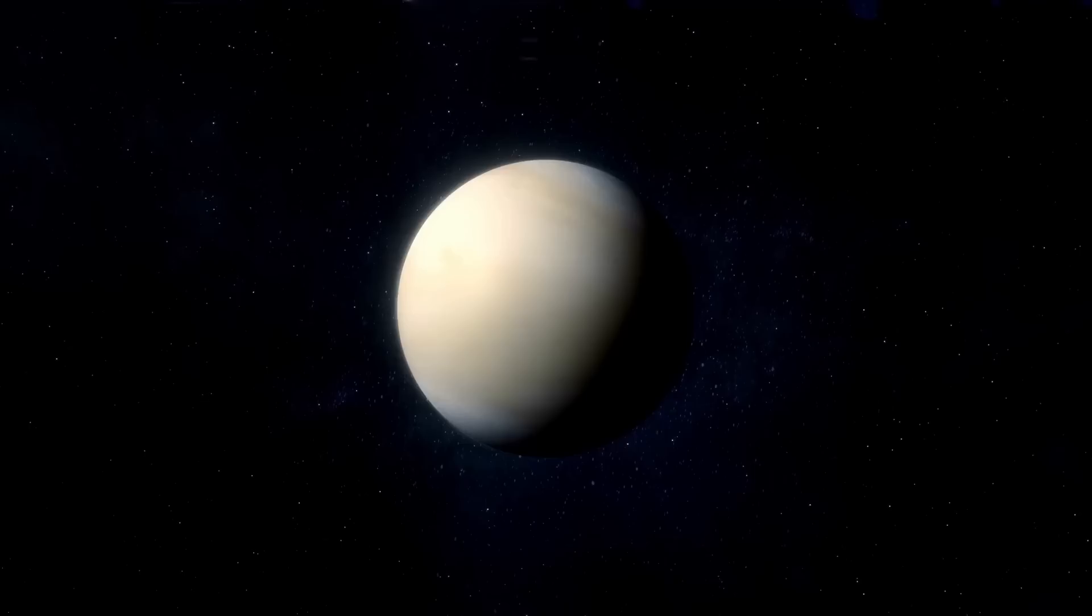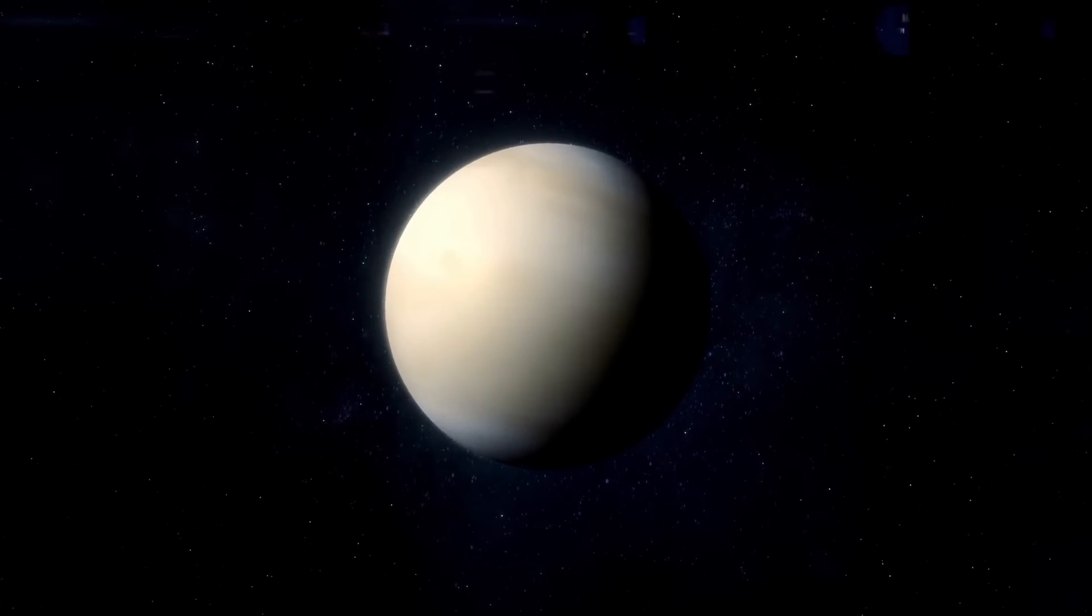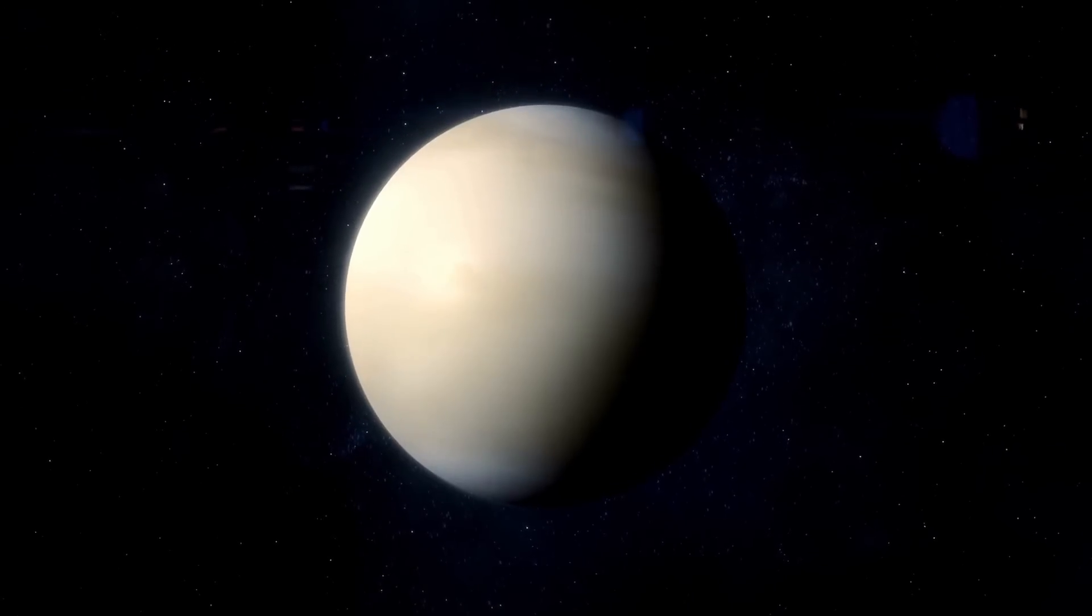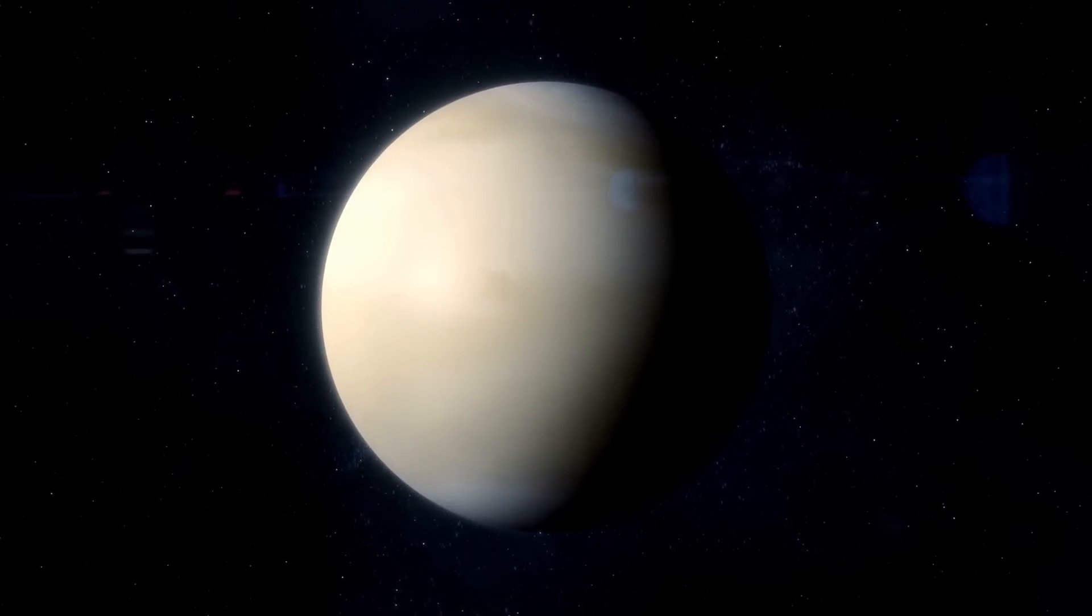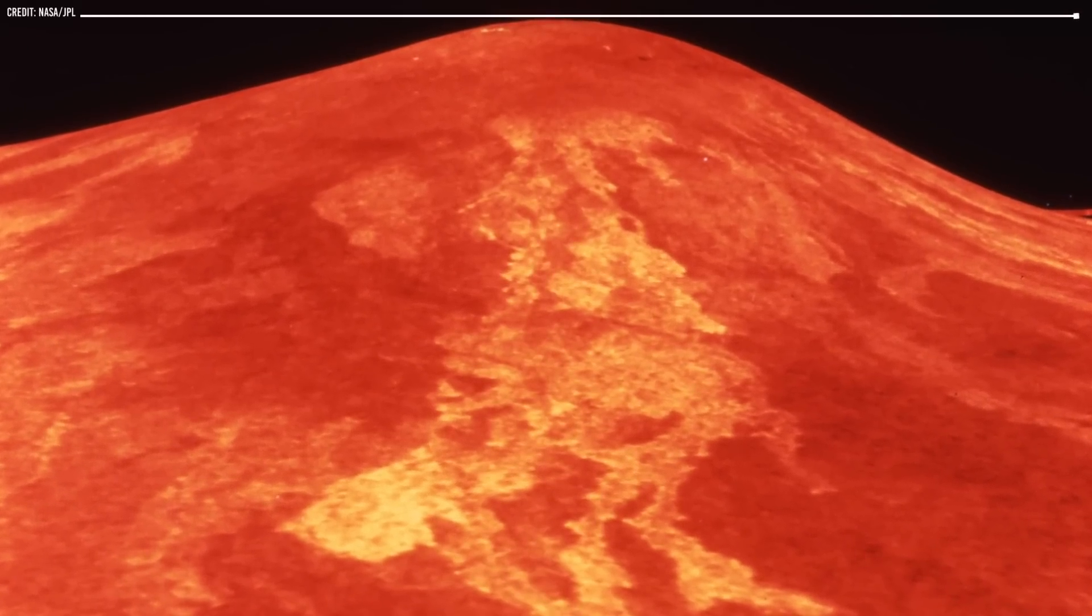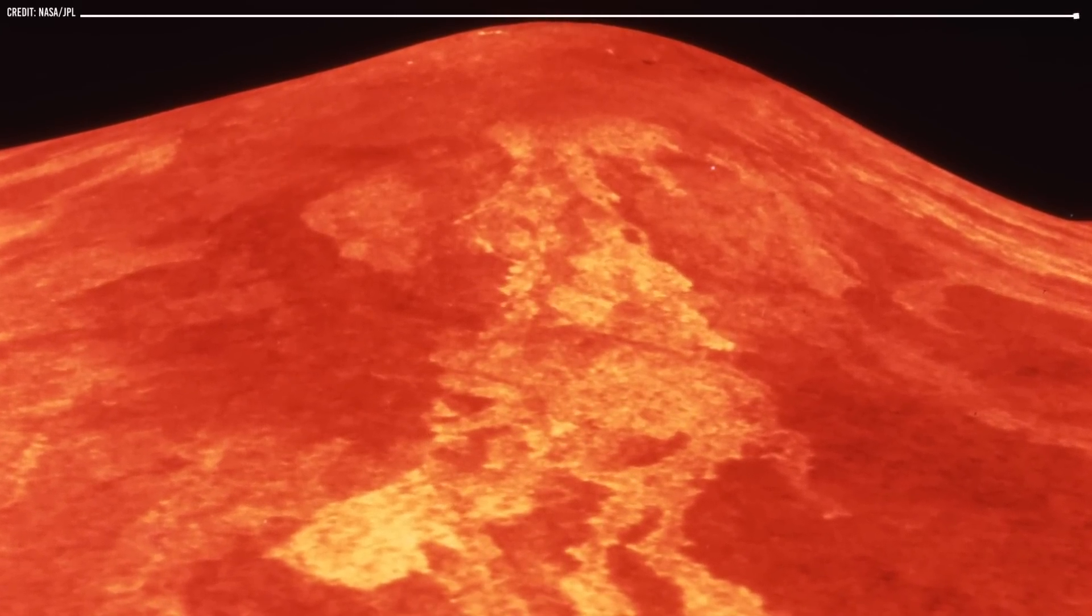In contrast, Venus does not have plate tectonics. Its crust is much thicker than Earth's, which prevents the movement of the lithosphere. As a result, the heat and pressure from the mantle are not released as efficiently, which can lead to catastrophic volcanic eruptions.